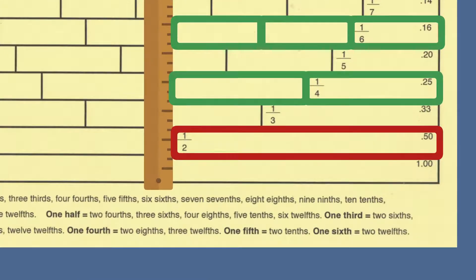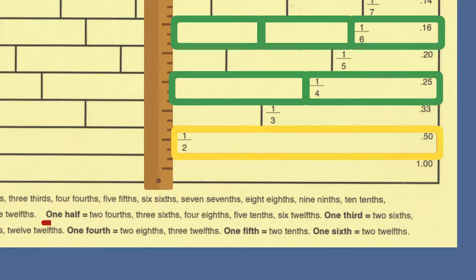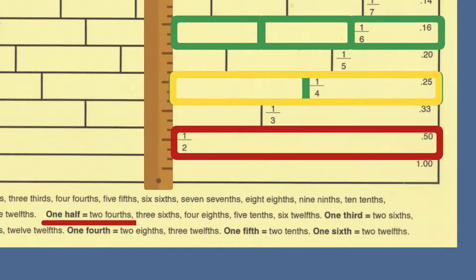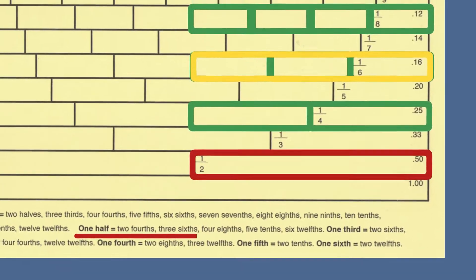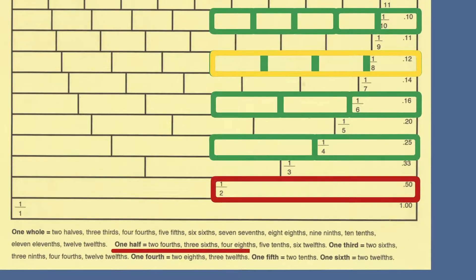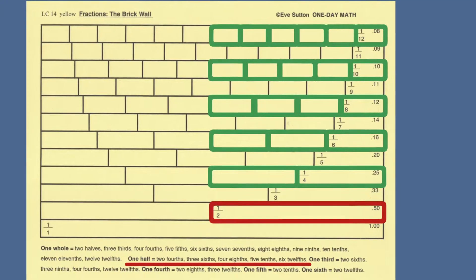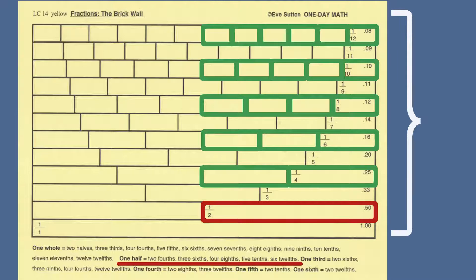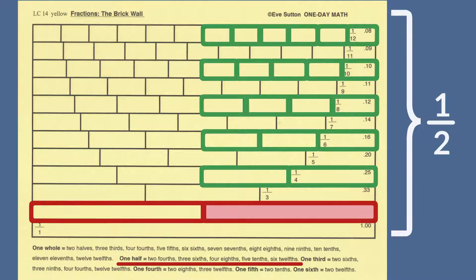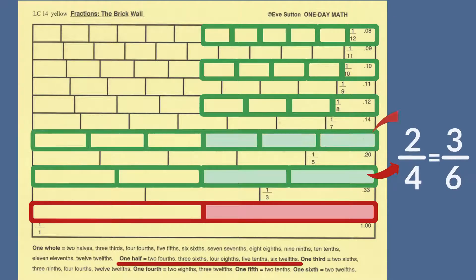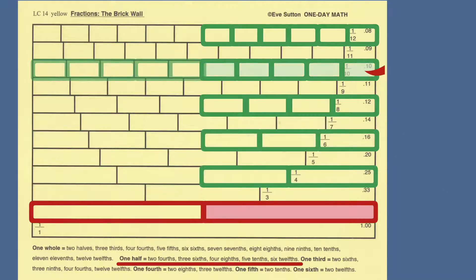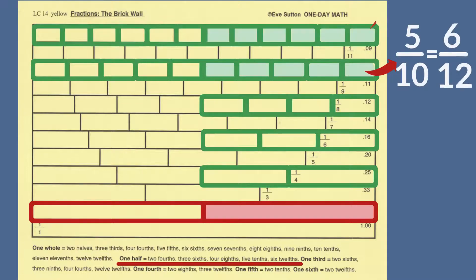You can read the answer along with me. One-half equals two-fourths, three-sixths, four-eighths, five-tenths, or six-twelfths. All of the fractions in this set are equal to one-half, so they are also equal to each other. Two-fourths equals three-sixths, five-tenths equals six-twelfths.